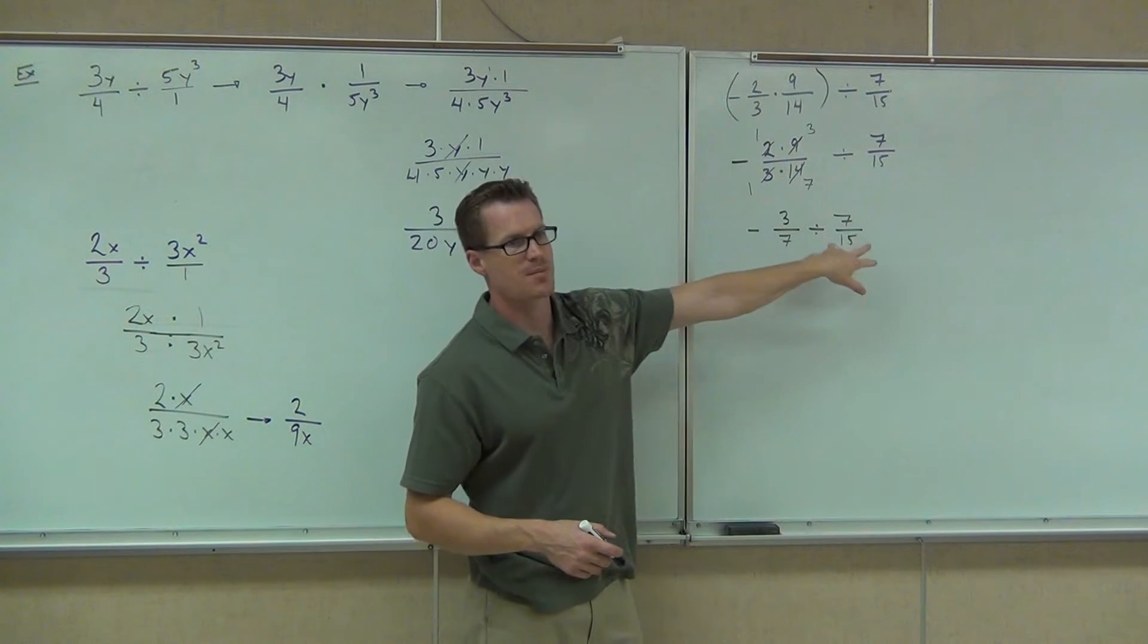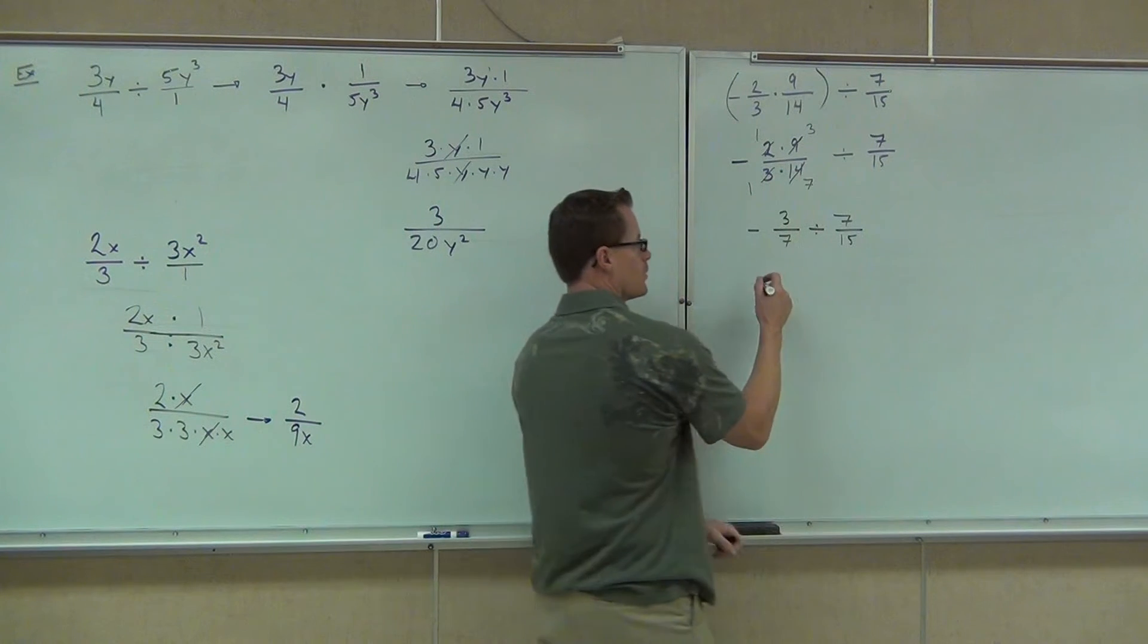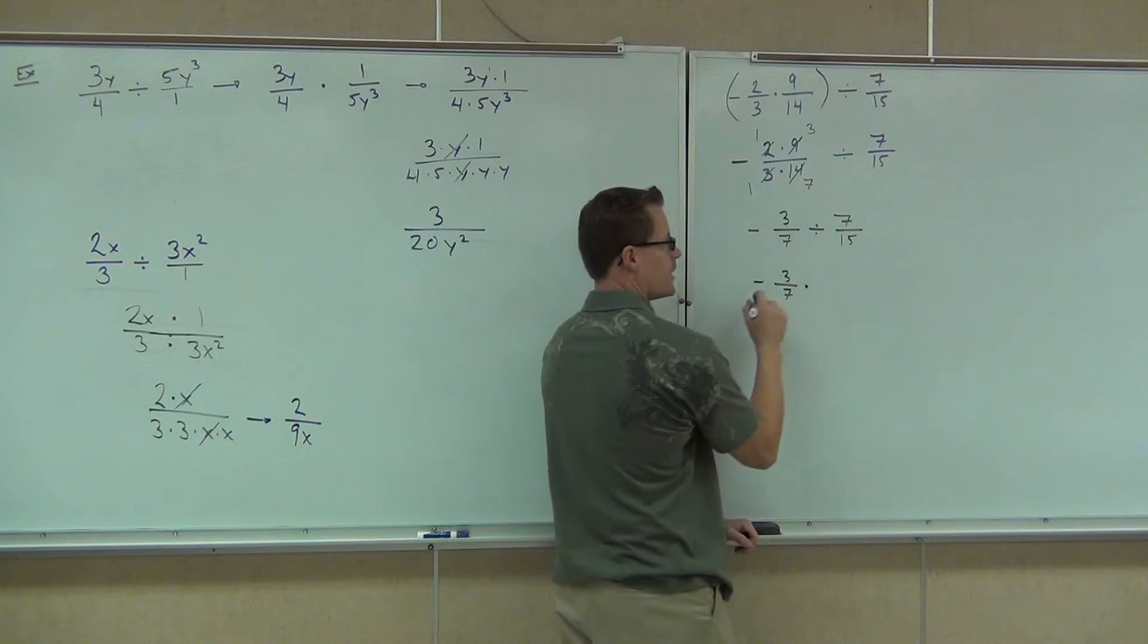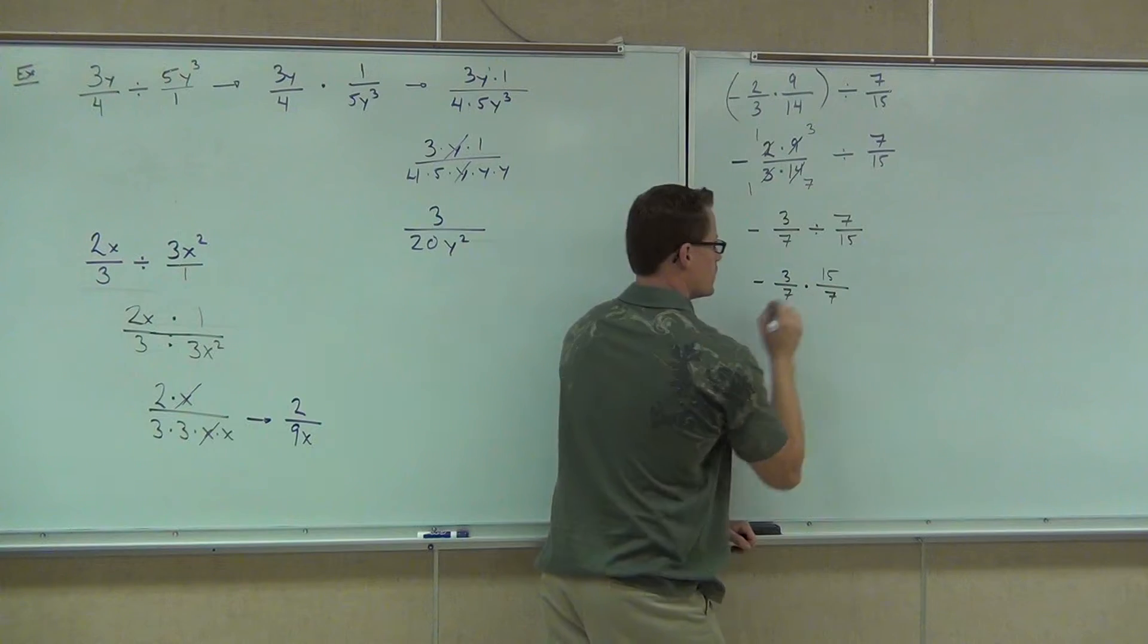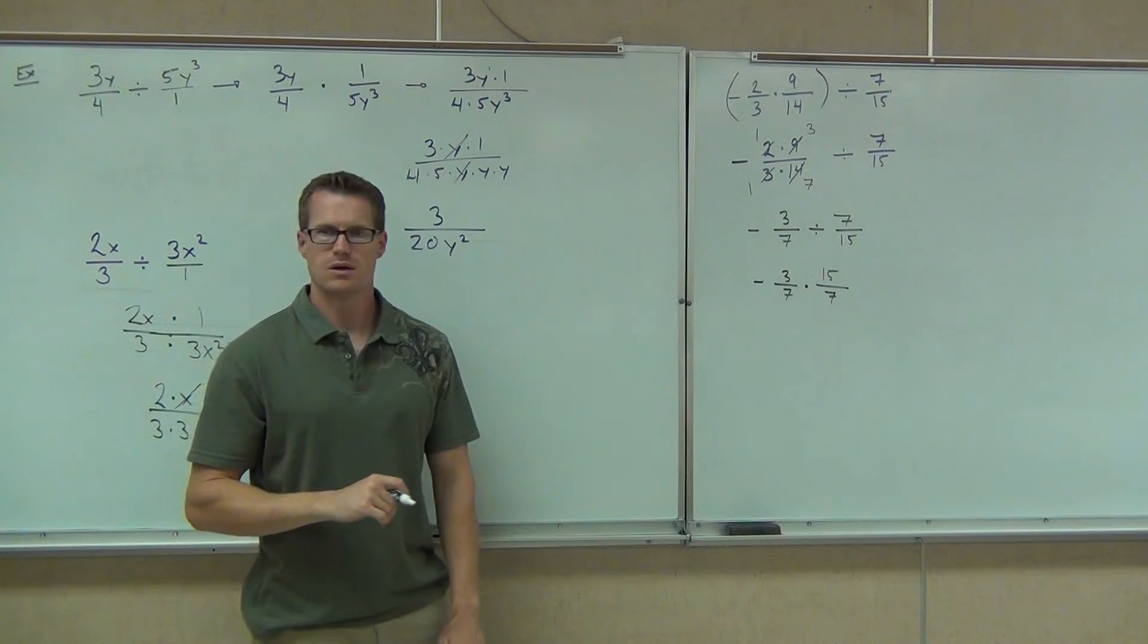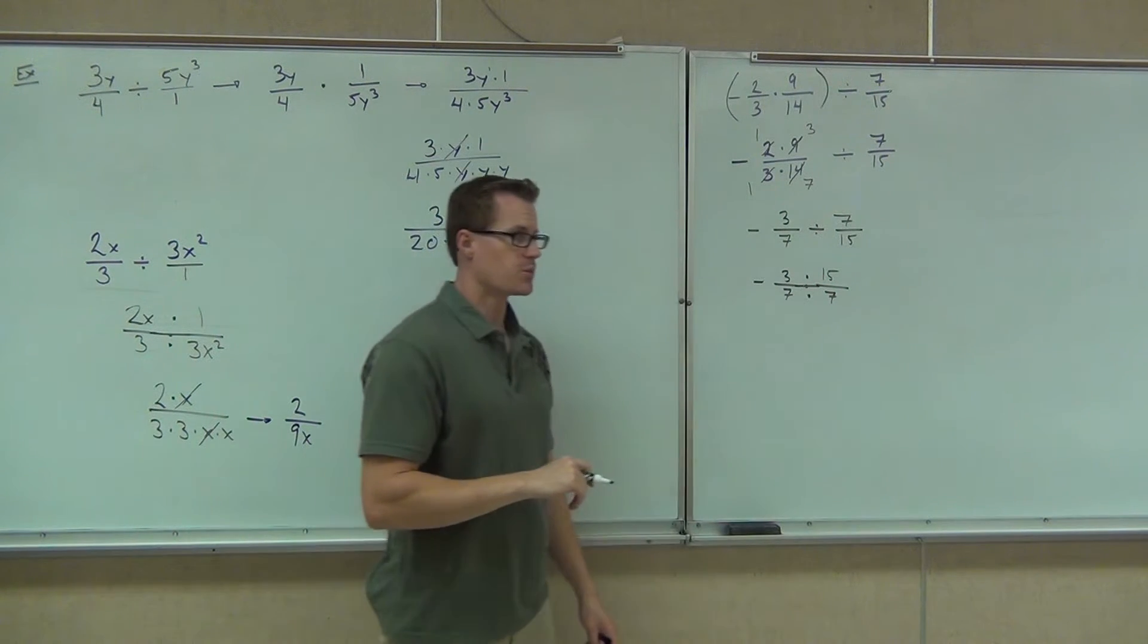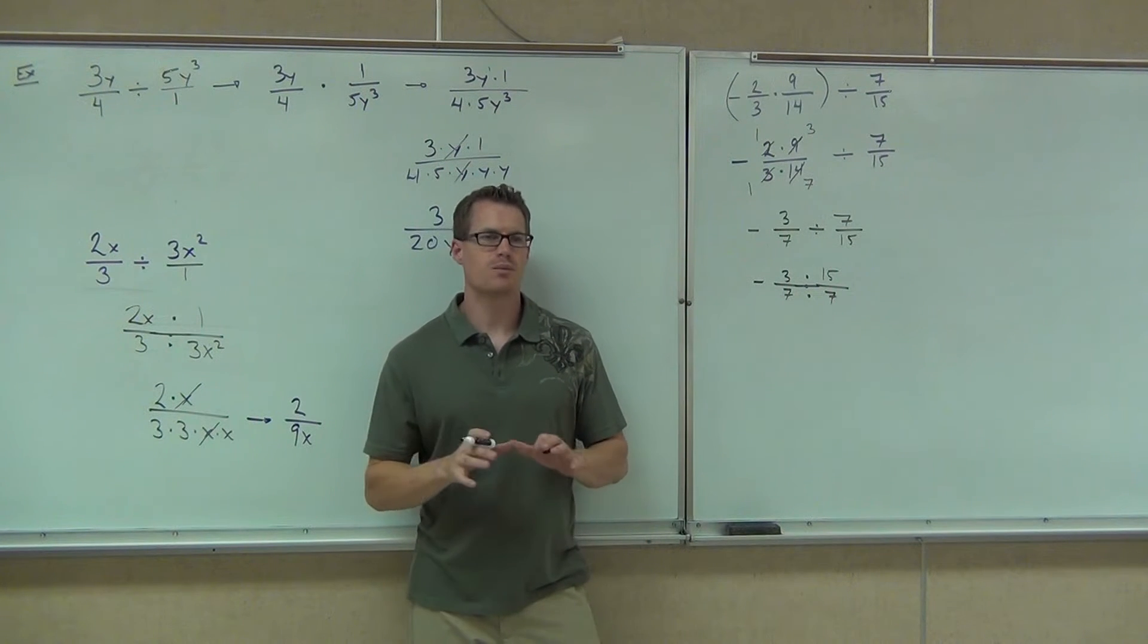Now we have a negative divided by a positive. I know right in my head that that's going to be a negative. I know that I'm going to keep that negative 3 7ths. I'm going to be multiplying it, but instead of 7 15ths, I'm going to have 15 over 7. Yes, no? We extend our line, signifying that we're actually multiplying, and then we look for anything that we can simplify. Can we simplify anything on this problem?